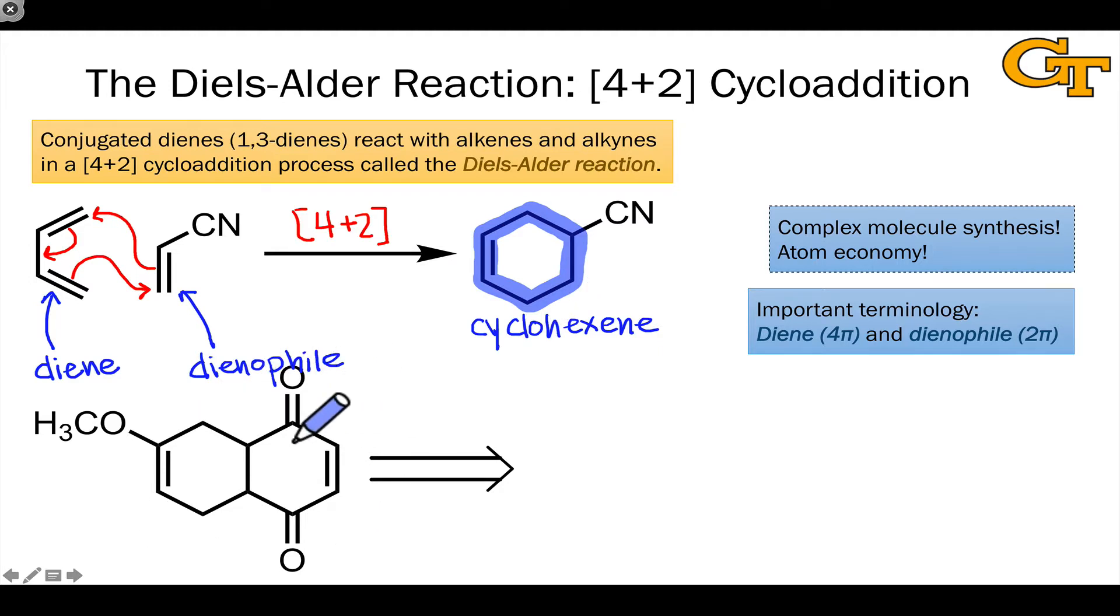But only one of them can be made using a Diels-Alder reaction. The one that can be made using a Diels-Alder reaction is the ring on the left, because this is a cyclohexene. The ring on the right is not.